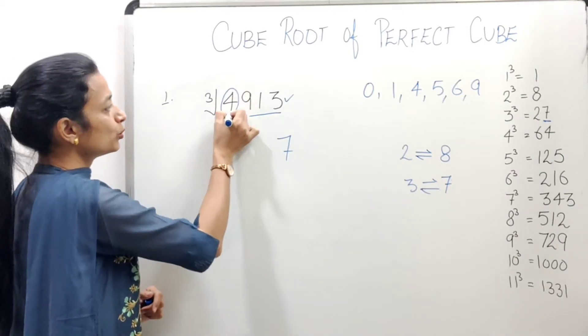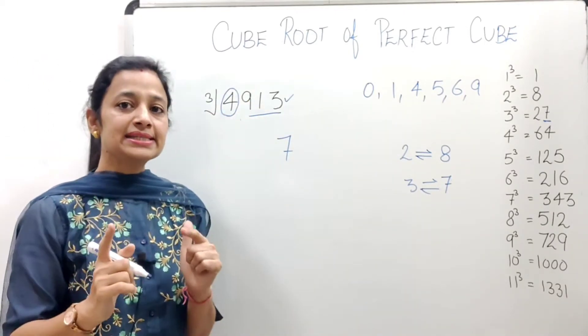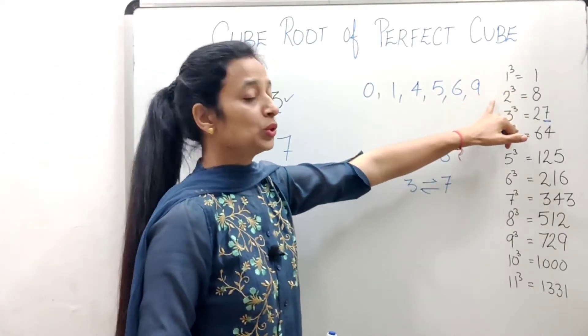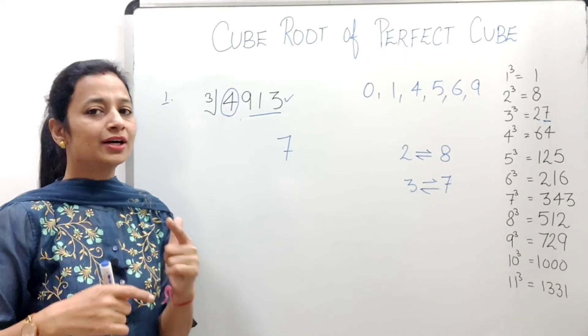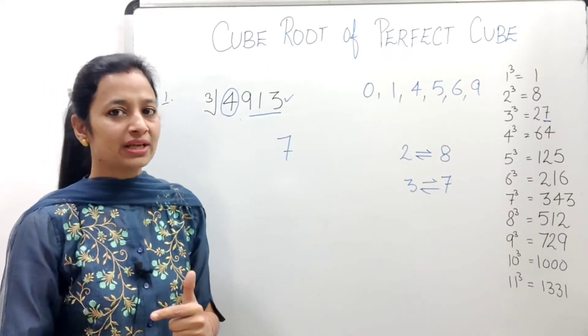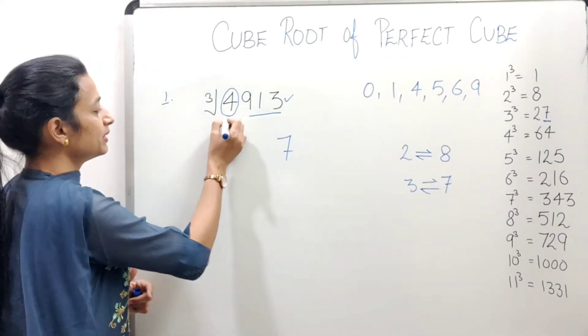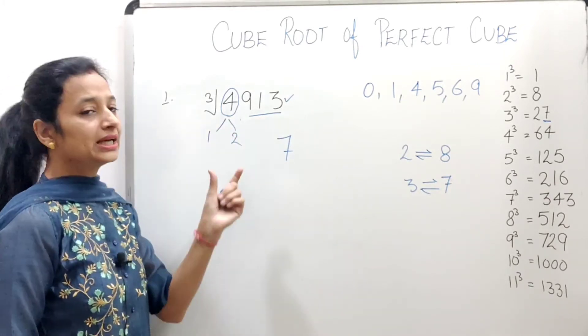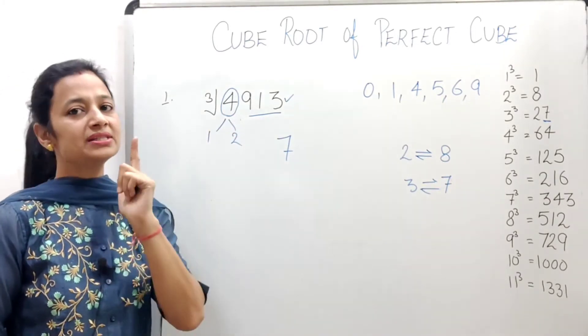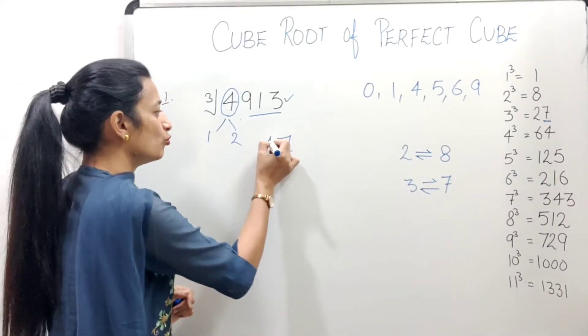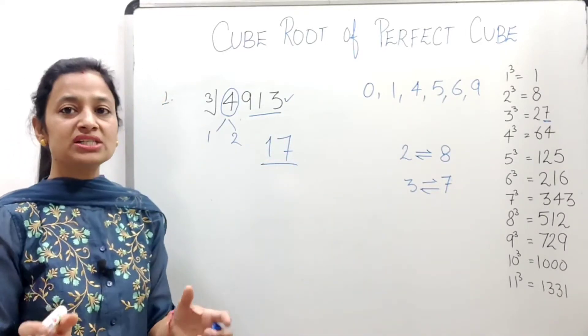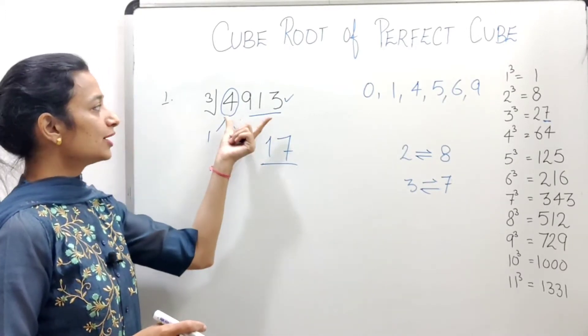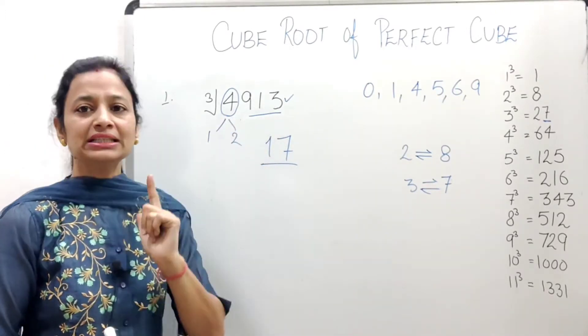Now, the remaining is 4. And 4 comes between which numbers' cubes? Between 1 and 2, because 1 cubed is 1 and 2 cubed is 8. So between which does it come? Between 1 and 2. Now, among these two, we have to take the smaller number.